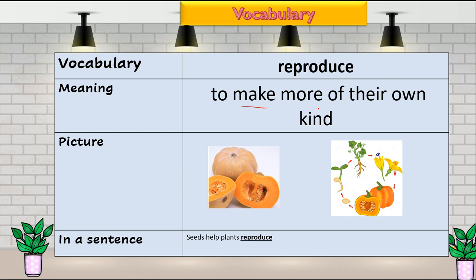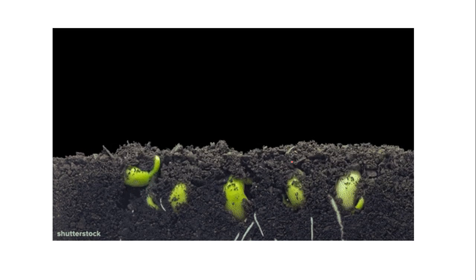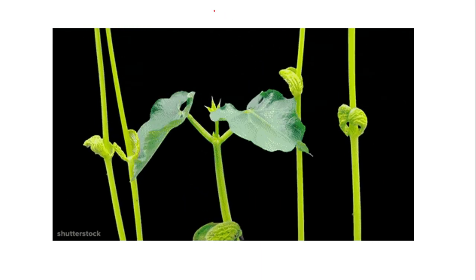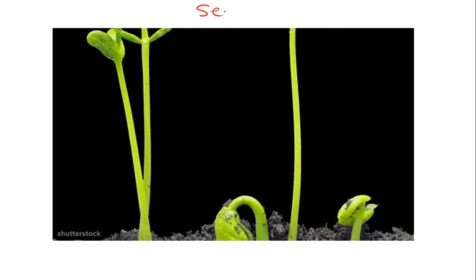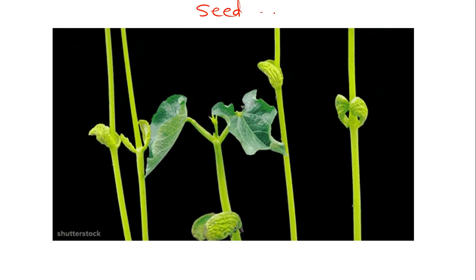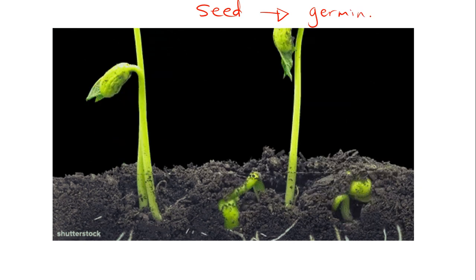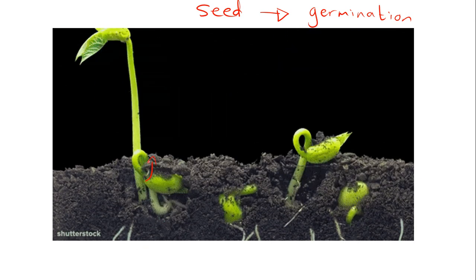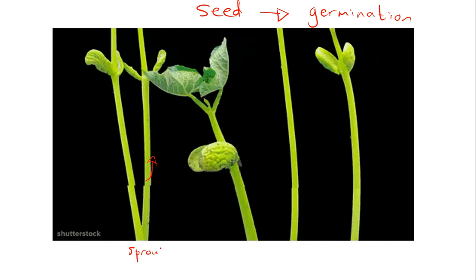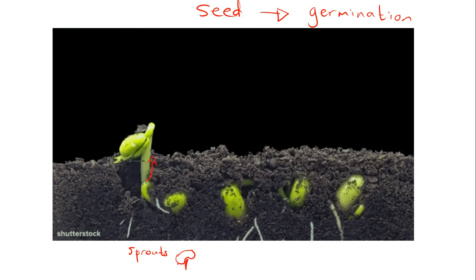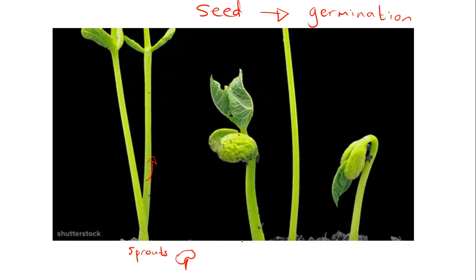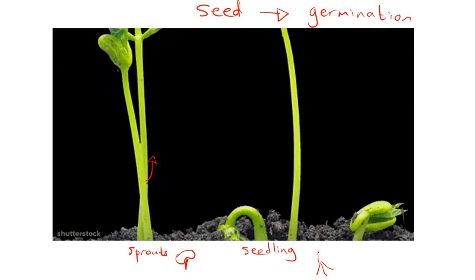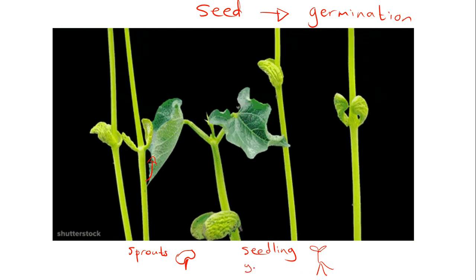We call this process reproduction — when plants make new plants. The main word we need to know is 'reproduce,' meaning to make more plants. When plants reproduce they make a seed, and a seed grows into a new plant. We call this process germination. Germination is when our tiny seed sprouts and grows a sprout. When it grows further it becomes a young plant called a seedling, which has roots, a stem, and some leaves.